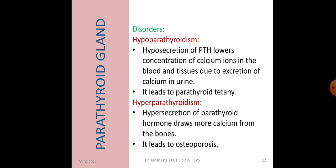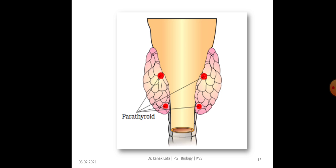Whereas in hyperparathyroidism, there is hypersecretion of parathyroid hormone, which draws more calcium from the bones and leads to osteoporosis. In the given figure, you may observe four parathyroid glands present on the back side of the thyroid gland.